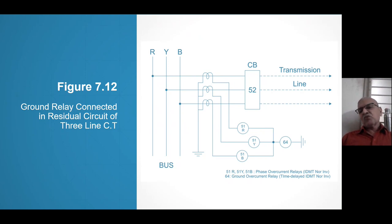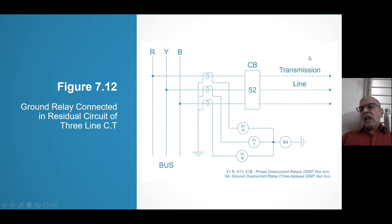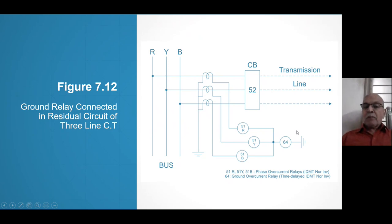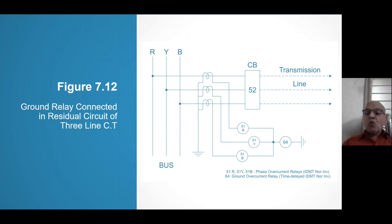Not only that, but the relay will not operate for a triple-line fault either. If due to fault 900 amperes pass, then on the 100/1 CT secondary that is 9 A, and 9 + 9 + 9 is also zero because it is a symmetrical fault. So relay 64 will not — and must not — operate, because the relay should indicate which kind of fault has occurred.